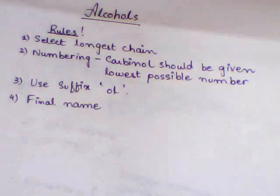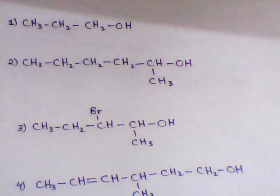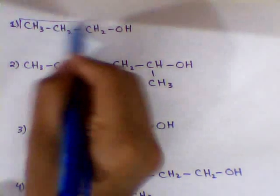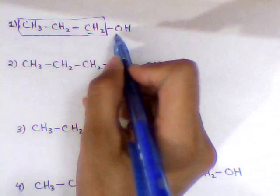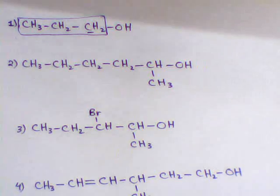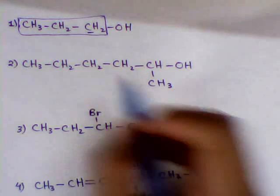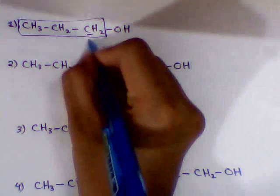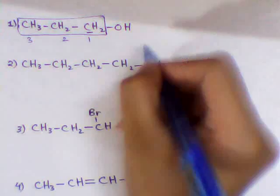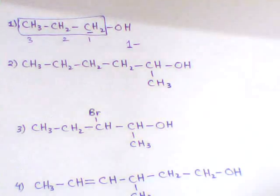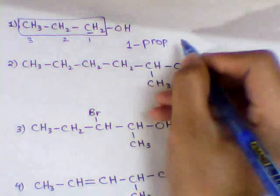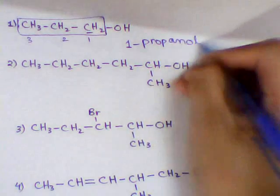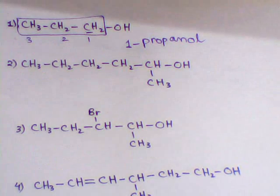Now let's practice some alcohol compounds. In example 1, we first select the longest chain. This is the carbinol atom because it is directly attached with the OH group. We start numbering from the right hand side to give the carbinol the lowest possible number. We write the position of the functional group, then 'prop' for 3 carbons, 'an' for a single bond, and 'ol' for alcohol. So it's 1-propanol.